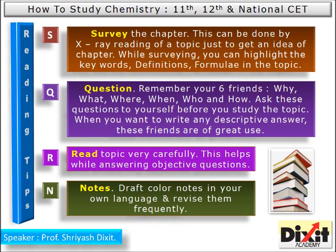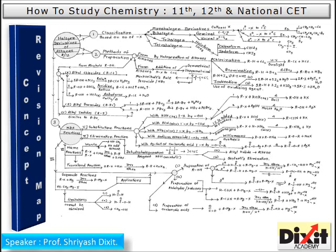When you want to write any descriptive answer, these question friends are of great use. R — Read the topic line by line very carefully; do not skip any part for the sake of options. This helps while answering objective questions. N — Notes: draft color notes in your own language and revise them frequently for long-term memorization.